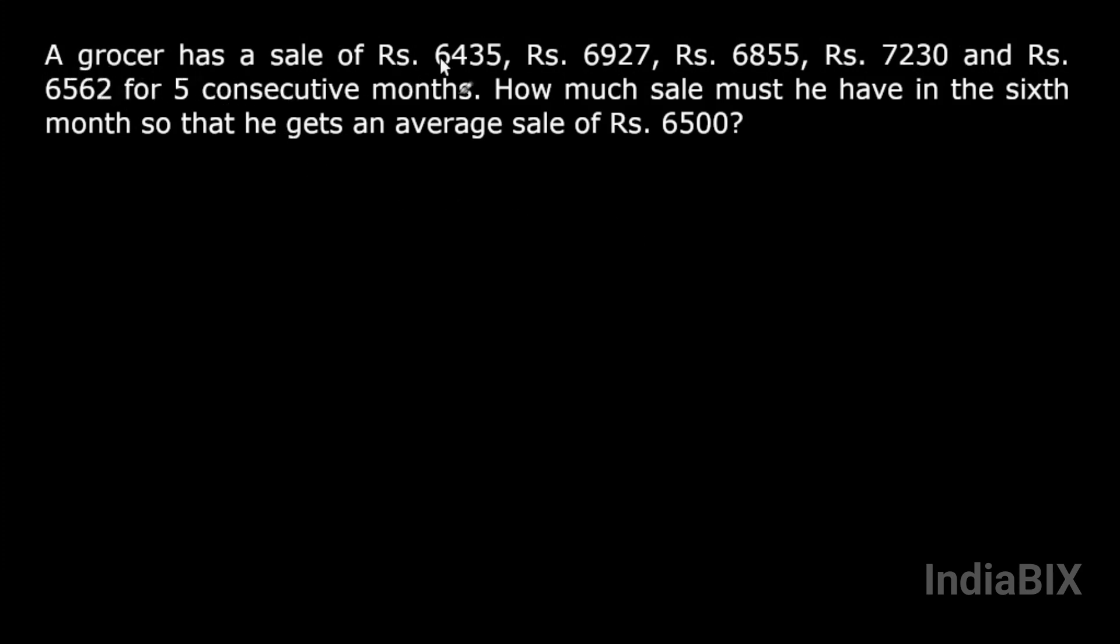A grocer has a sale of Rs. 6435, Rs. 6927, Rs. 6855, Rs. 7230, and Rs. 6562 for five consecutive months. How much sale must he have in the sixth month? There is a grocer and he makes these sales for five consecutive months and we have to calculate how much sale he has to make in the sixth month.